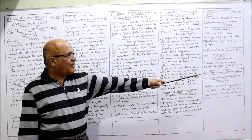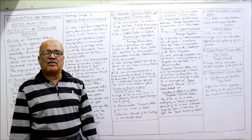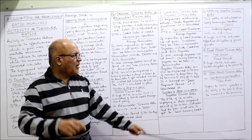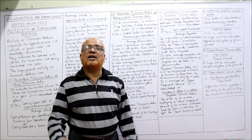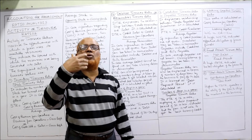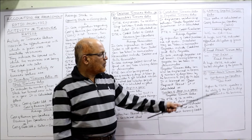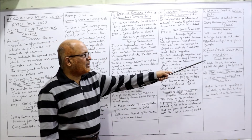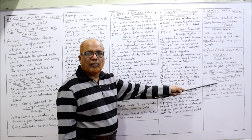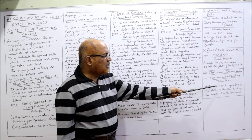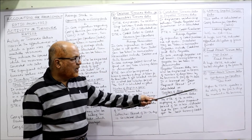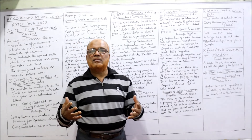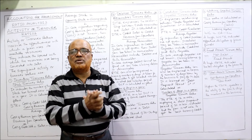The sixth and final ratio is Total Assets Turnover Ratio. Similar to fixed assets turnover ratio, the numerator is Net Sales or Revenue from Operations, but the denominator is Total Assets instead of fixed assets. A higher total assets turnover ratio indicates a greater ability of the firm to utilize its investment in the assets of the business.